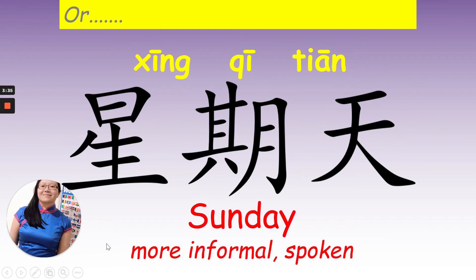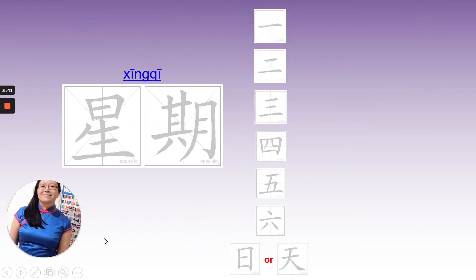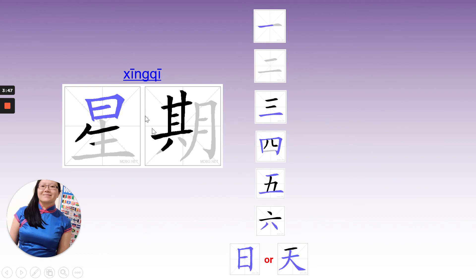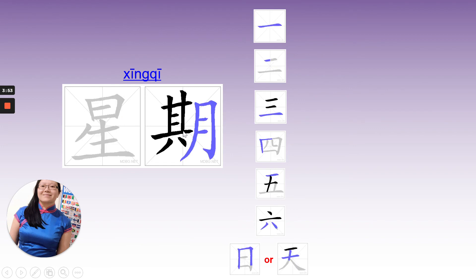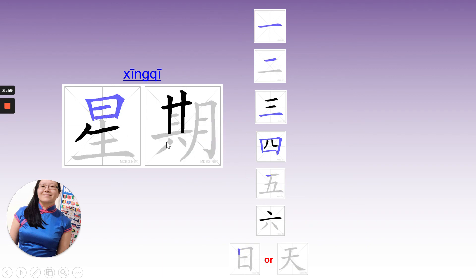So remember the phonics we talked about — x is the xi sound, q is the qi sound. So it is xing qi. Now you have a go at writing Monday to Sunday: xing qi yi, xing qi er, xing qi san, xing qi si, xing qi wu, xing qi liu, xing qi ri, xing qi tian.